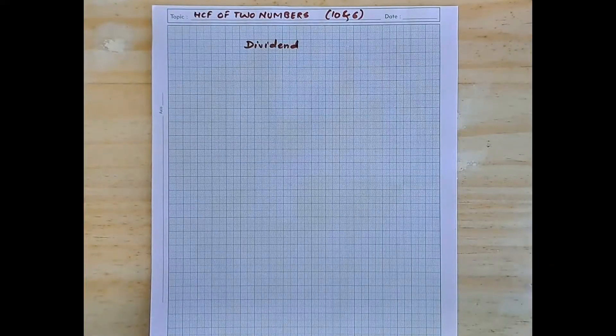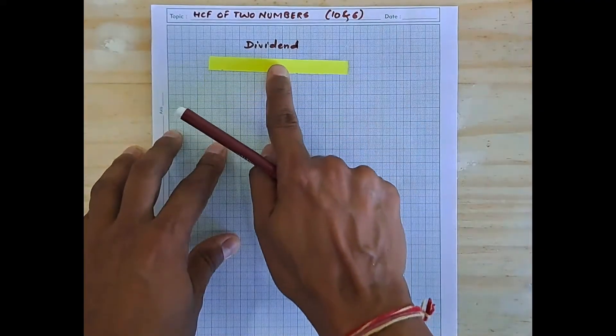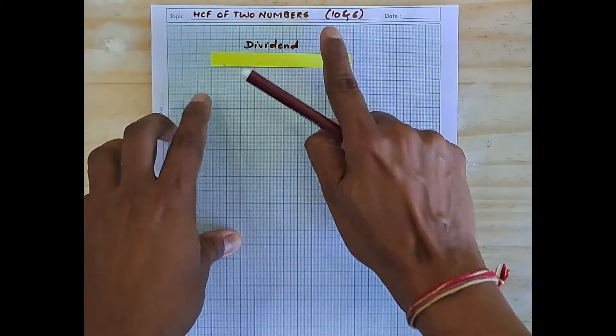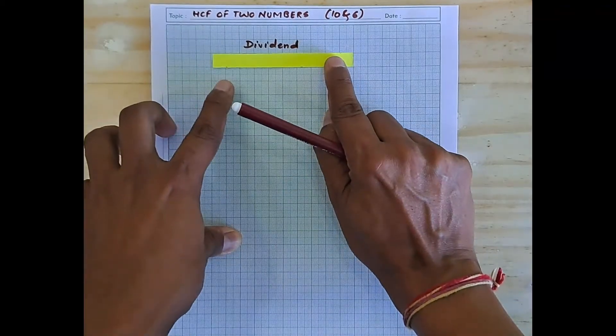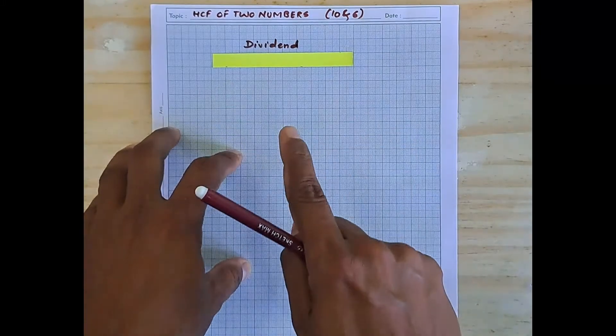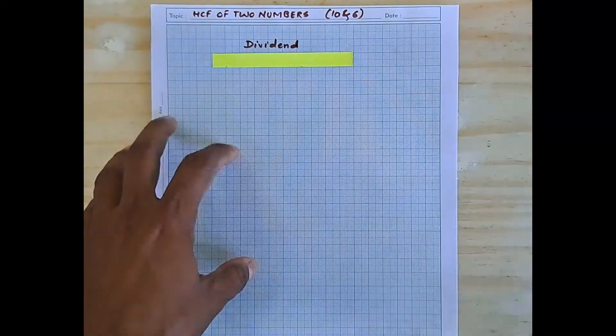For this purpose we need to cut out some colored strips of paper. This strip which is 10 centimeter in length, you can see 10 centimeter is one of the numbers here. I have cut out a strip which measures 10 centimeter. That strip denotes the dividend, that means the larger number.